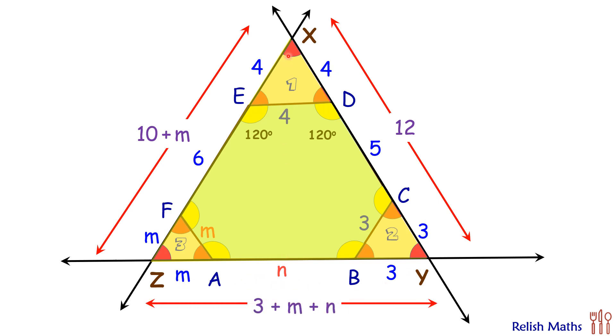Here, angle X is 60 degrees, Y is 60 degrees, and Z is 60 degrees. Thus, XYZ is an equilateral triangle and we can equate the sides.